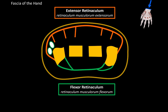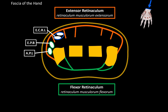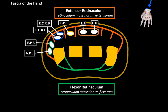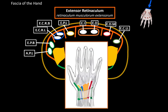The first canal, closest to the thumb, contains tendons of the abductor pollicis longus and extensor pollicis brevis. The second canal contains tendons for the extensor carpi radialis longus and brevis. The third canal contains tendons for the extensor pollicis longus. The fourth canal contains tendons for the extensor digitorum and extensor indicis. The fifth canal contains tendons for the extensor digiti minimi. The sixth canal contains tendons for the extensor carpi ulnaris. These tendons are grouped as the dorsal tendinous sheath, meaning each canal forms a sheath around the tendons to protect them.